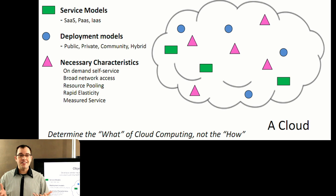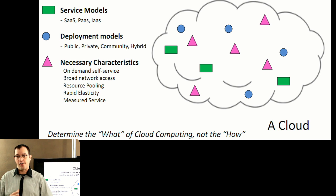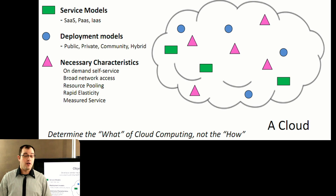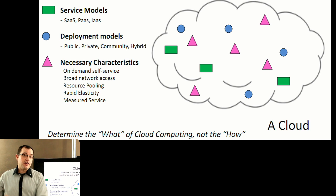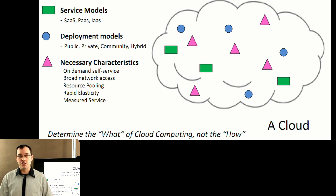Resource pooling really just means that it's a shared resource. You can't have a cloud for one — if you have a cloud for one, it's not a cloud. You've got to share resources with other things. In a private cloud, you may be sharing resources between different parts of the same organization. So accounting uses these servers on Tuesdays and Thursdays, and marketing uses these servers on Mondays, Wednesdays, and Fridays. You're sharing the resources — they're a pool, and you can do what you need with them.